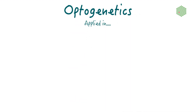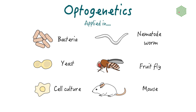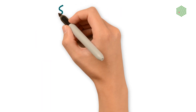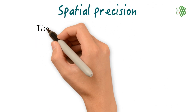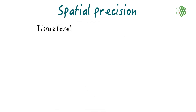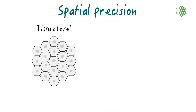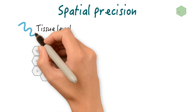Optogenetic techniques have been implemented in a wide range of organisms, and here are just a few examples of these. The biggest advantage of optogenetics compared with classical approaches for controlling biological processes is the spatial temporal precision it can achieve.